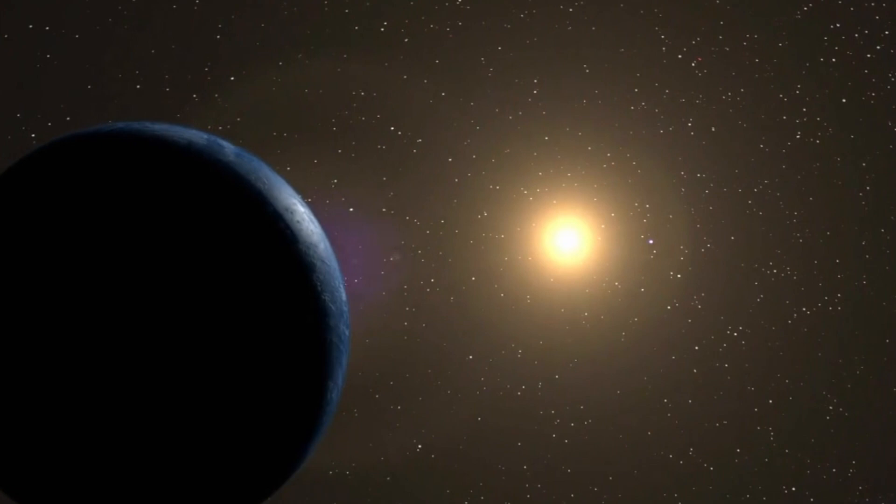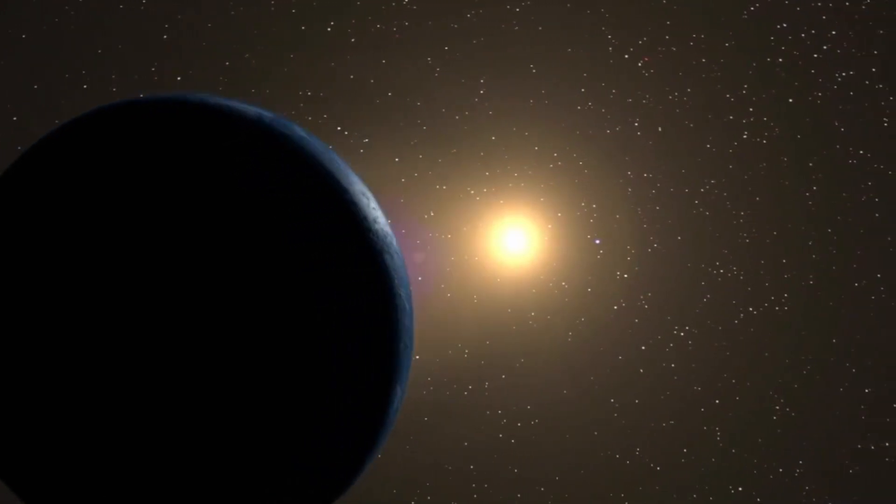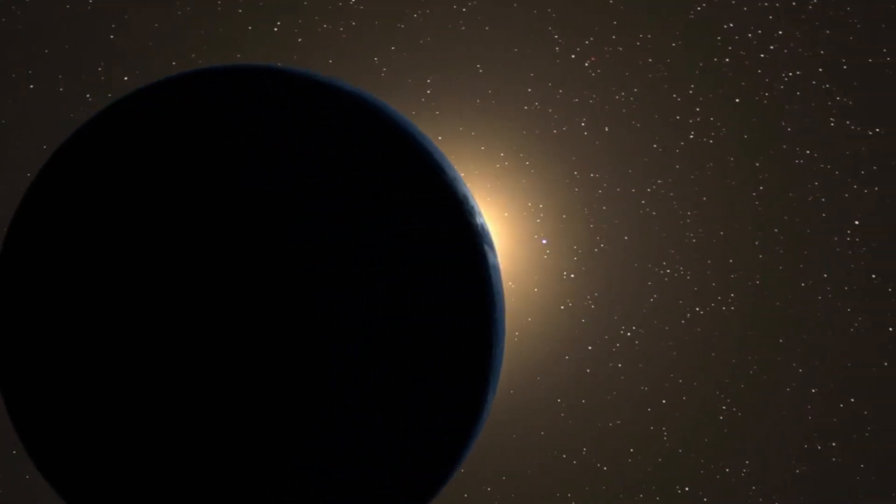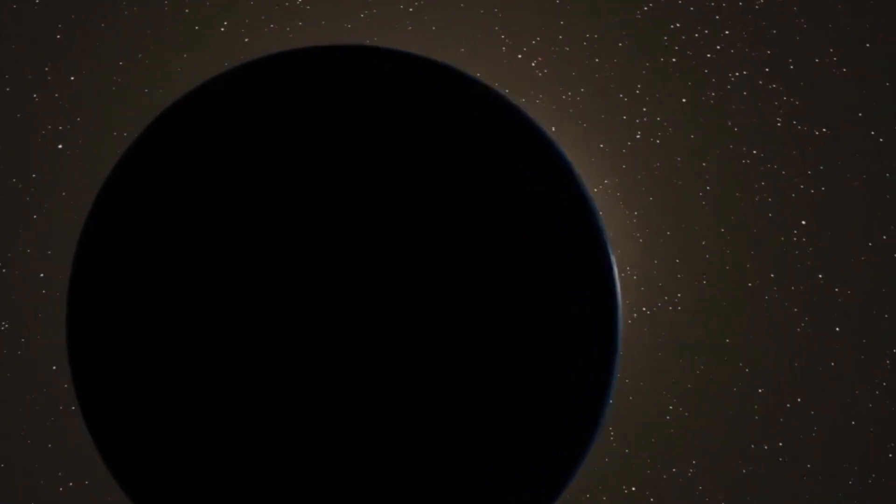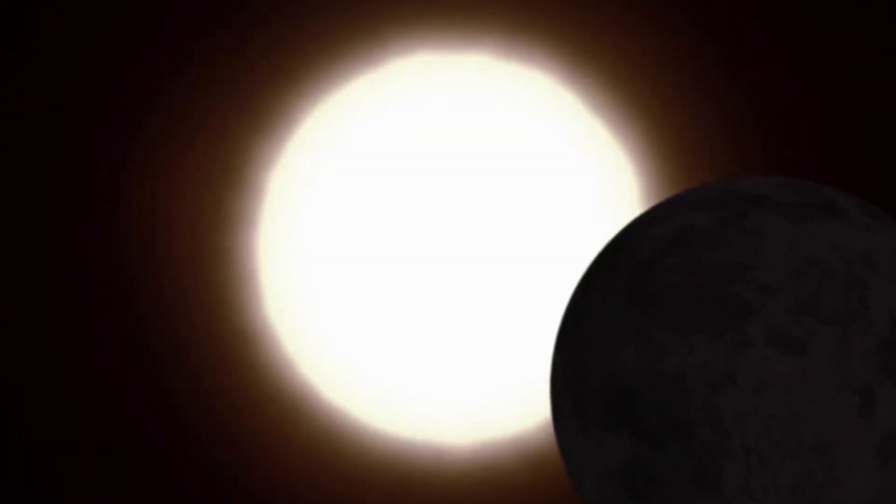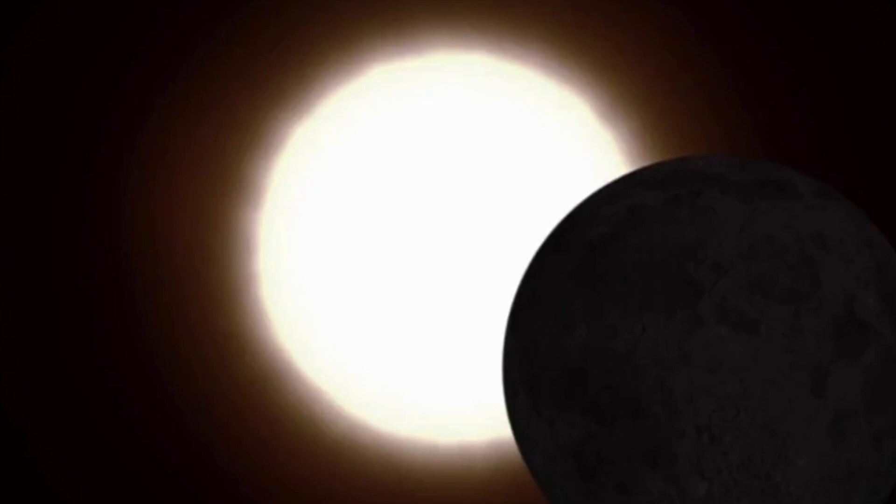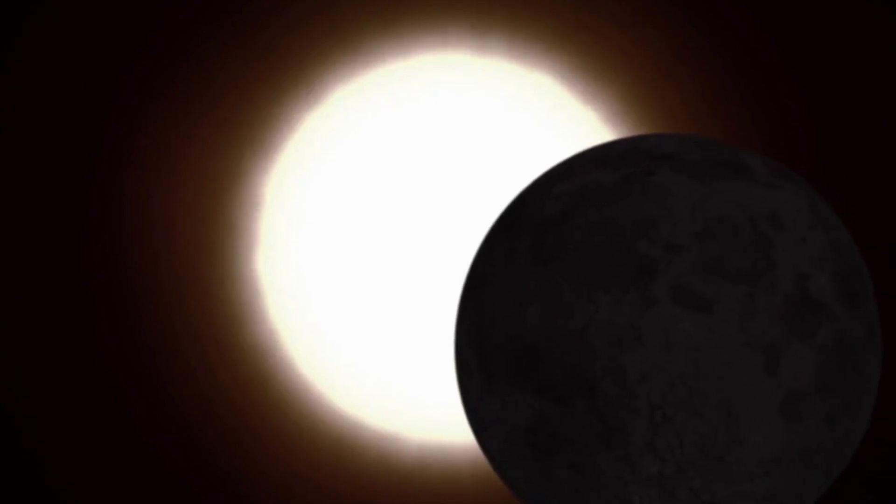Partial Solar Eclipse. Unlike its total counterpart, a partial solar eclipse occurs when the moon only partially covers the sun. This results in a striking celestial display, with a portion of the sun appearing as if bitten by darkness.